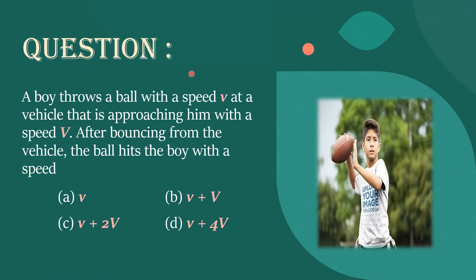A boy throws a ball with a speed small v at a vehicle that is approaching him with a speed capital V. After bouncing from the vehicle, the ball hits the boy with a speed. Options: a) small v, b) small v plus capital V, c) small v plus 2 times capital V, and d) small v plus 4 times capital V.